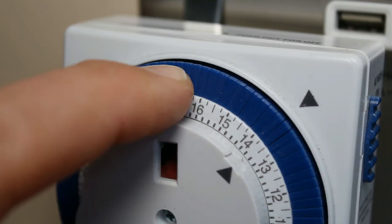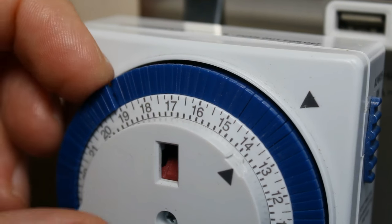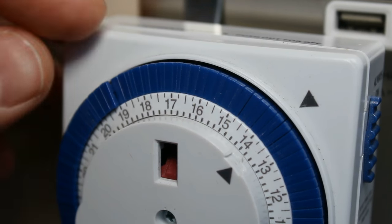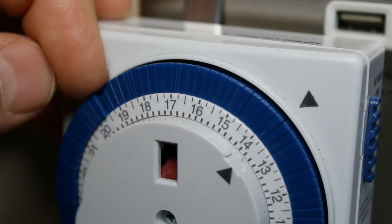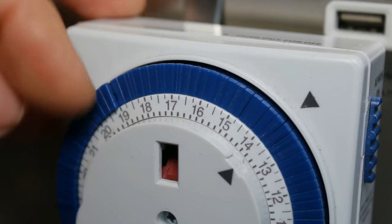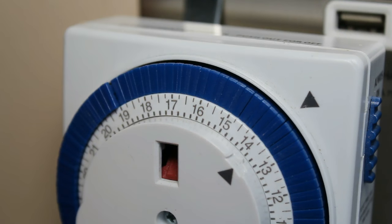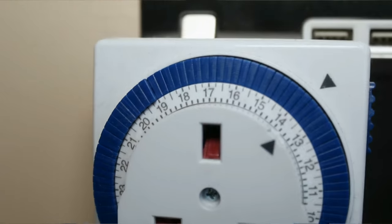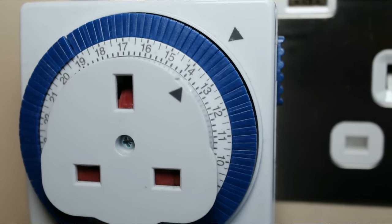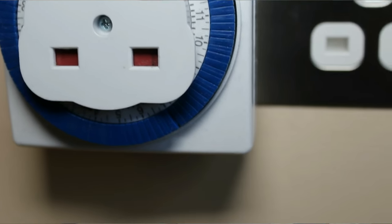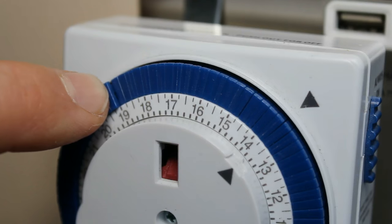When they're pushed in like those are along there, that means the appliance will be on. When they're up like those there, see pull them out, that's when the timer is off. Currently this timer is actually set to be on for a full 12 hours from 7 all the way through to 1900, so 7 o'clock at night.